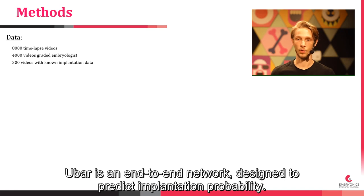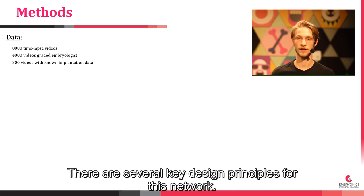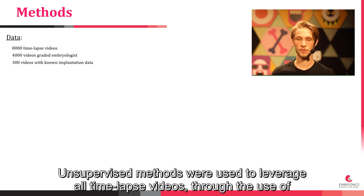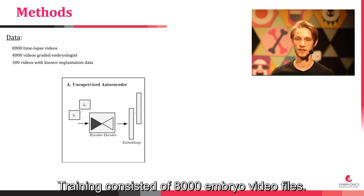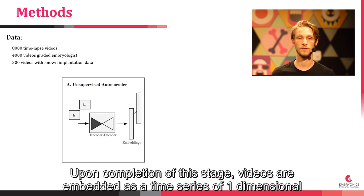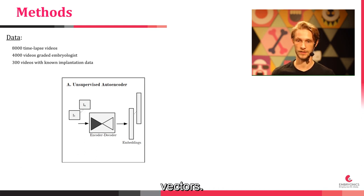UBAR is an end-to-end network designed to predict implantation probability, with several key design principles. Unsupervised methods were used to leverage all time-lapse videos through the use of an autoencoder. Training consisted of 8,000 embryo video files. Upon completion of this stage, videos are embedded as a time series of one-dimensional vectors.